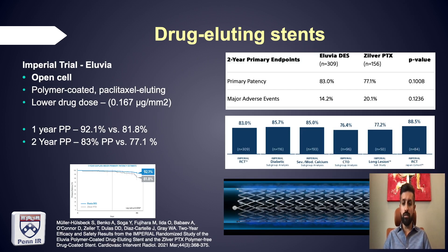Now we also have the Eluvia stent. It is a polymer-coated, paclitaxel-eluting stent — rather than just coated — which allowed for a much lower drug dose of only 0.167 micrograms per millimeter. A head-to-head trial with ZilverPTX showed improved one-year primary patency of 92% versus 82%, and better two-year primary patency of 83% versus 71%. Even in subgroup analysis, two-year primary patency was maintained in the high 70s and 80s.